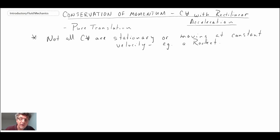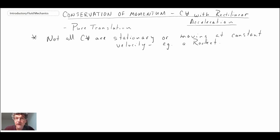It turns out the equations as we currently have derived them do not apply, so we have to do a little bit of a correction. That's what we're going to be doing in this segment — coming up with a modified version of conservation of linear momentum for a control volume undergoing rectilinear or translational acceleration.